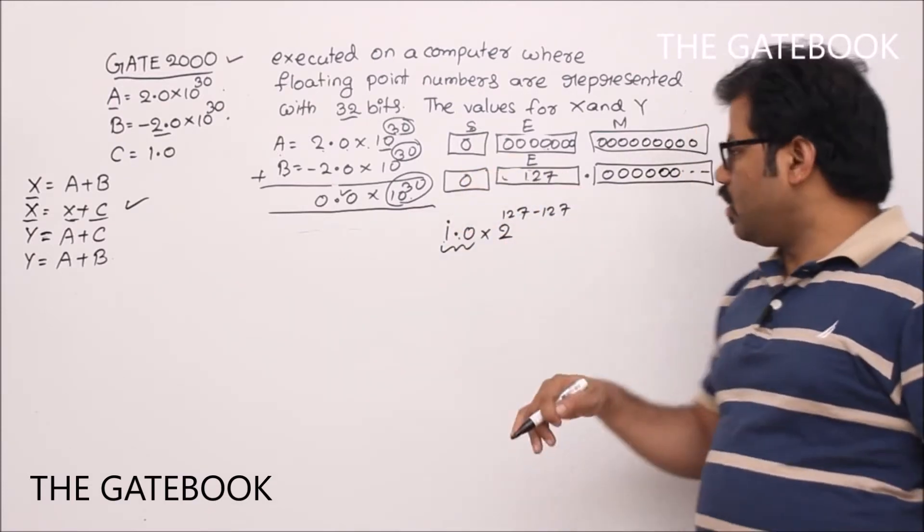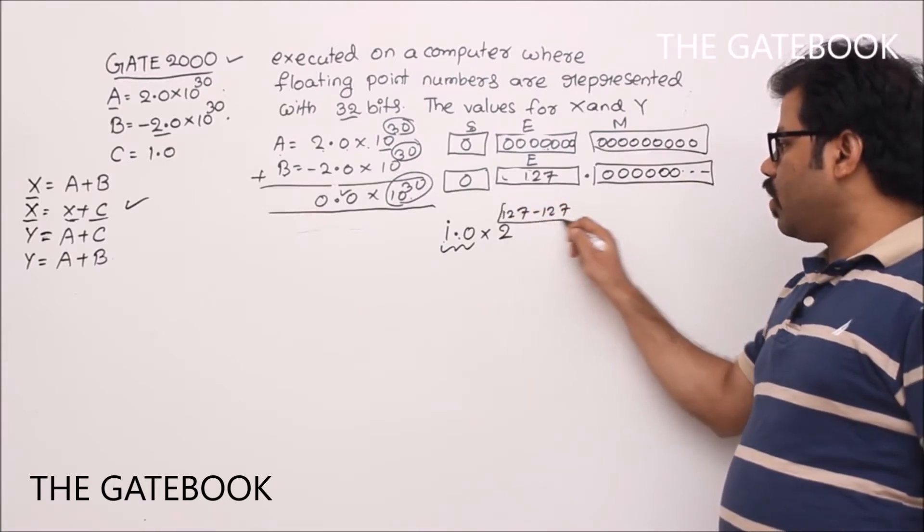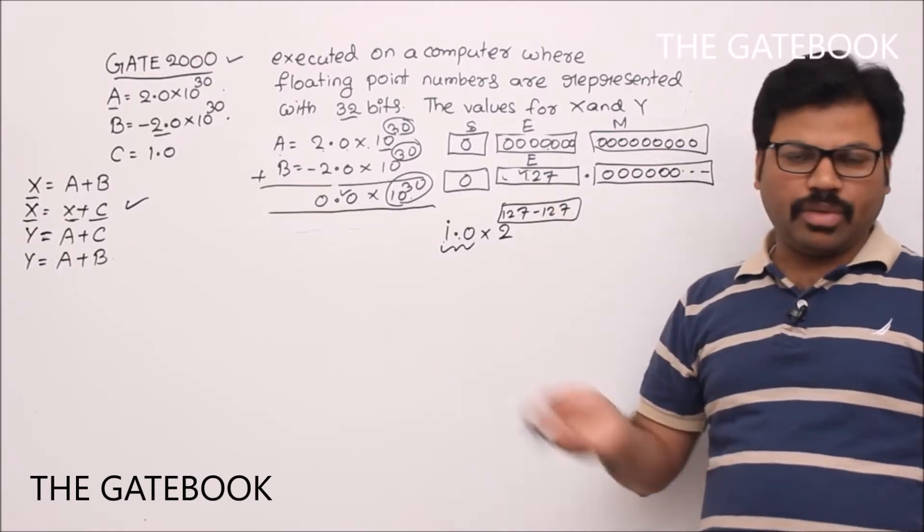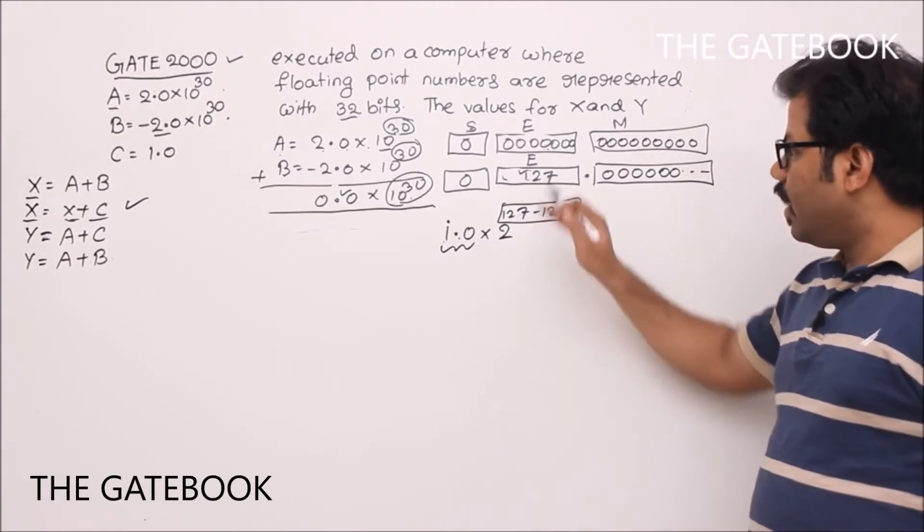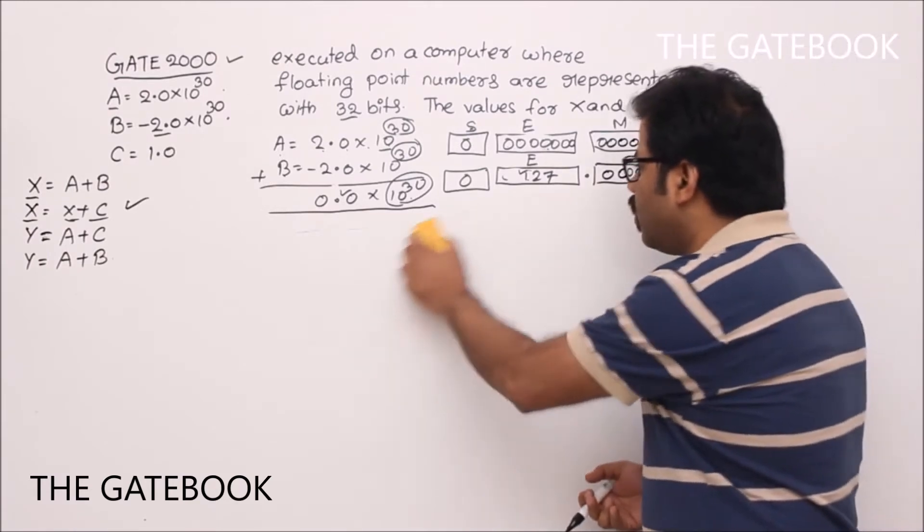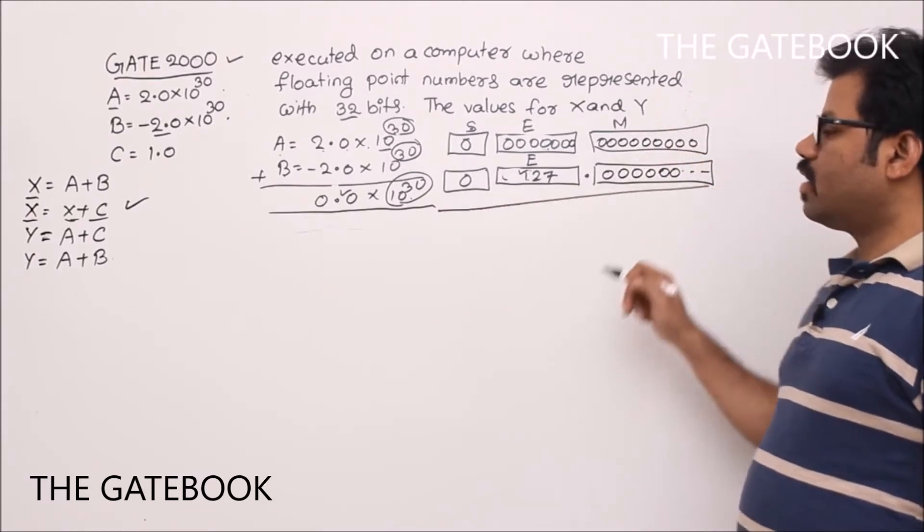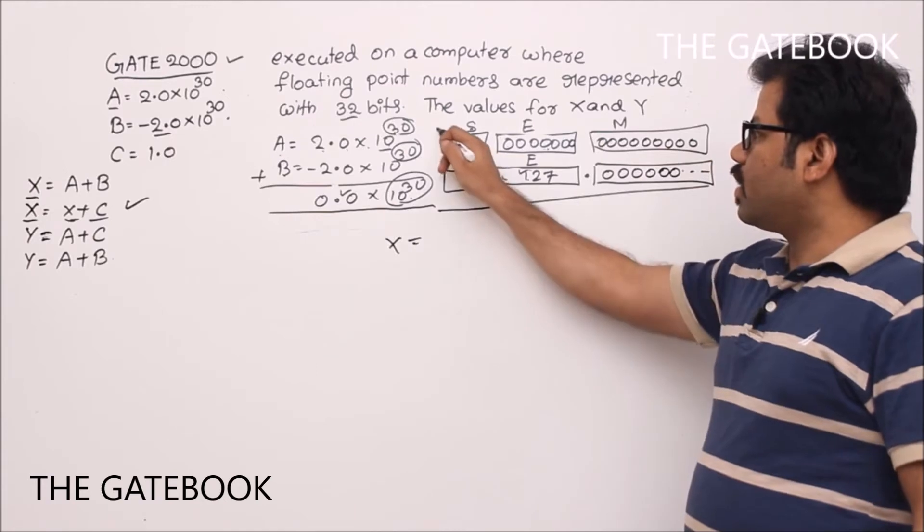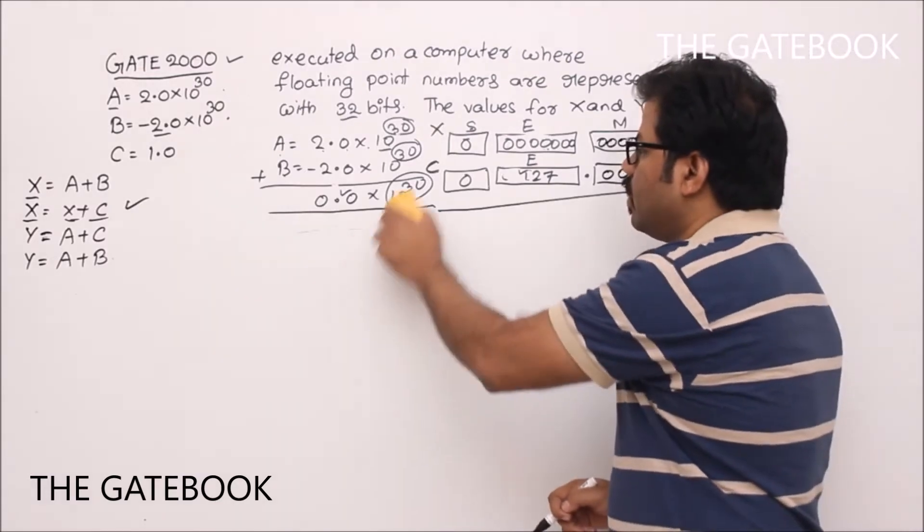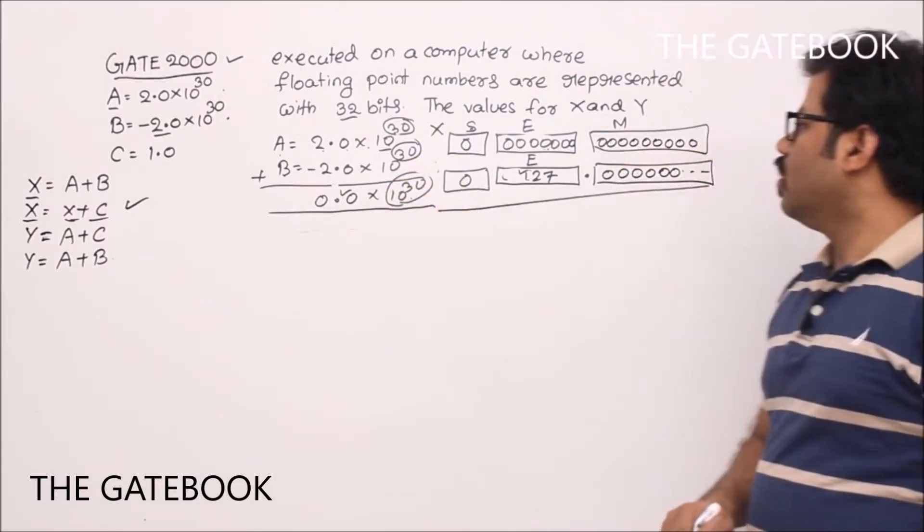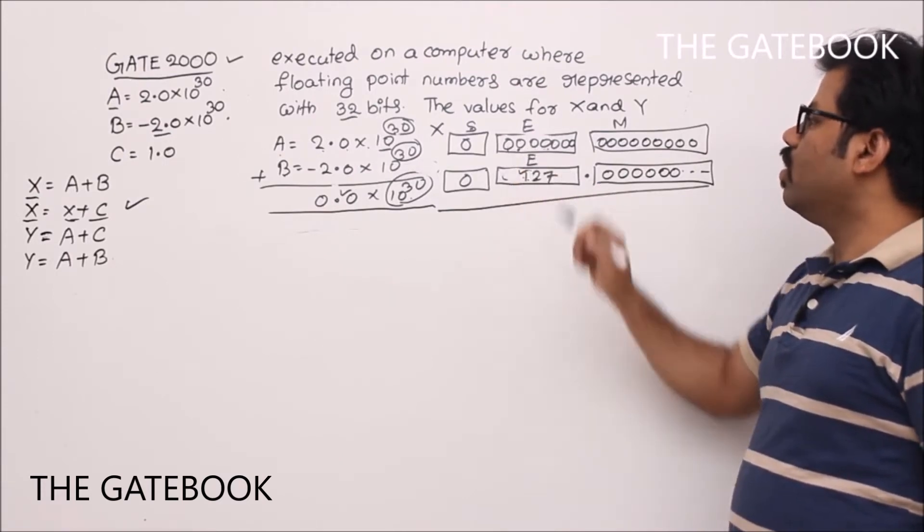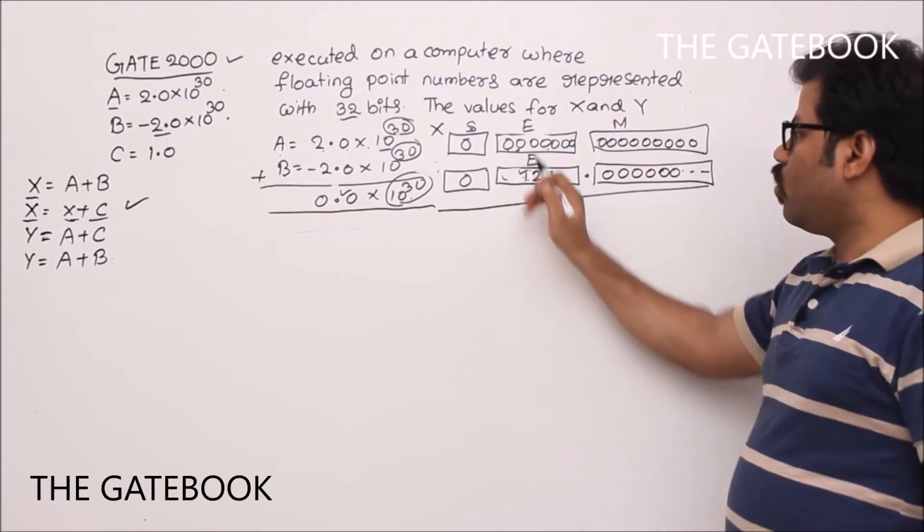So, here 1.0, mantissa can be written as 1 is implicit, then like this 1.0, 0 means all zeros, right? In that way, we will write 2 power 0, right? Here, it will be 2 power 0. So, but 0 is nothing but 127 minus 127. Then we have to represent here 127, remember. Okay? Your intention is you want to write 2 power 0, but in XS127 format, we have to represent that as 127. Because 127 is going to be subtracted, that will become 0. What is going to happen if you add them? So, we will be adding X equal to X plus C, correct?